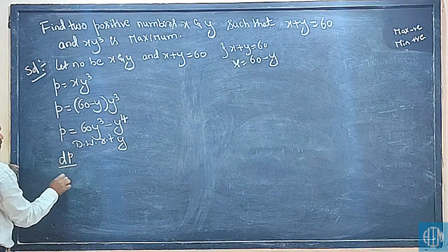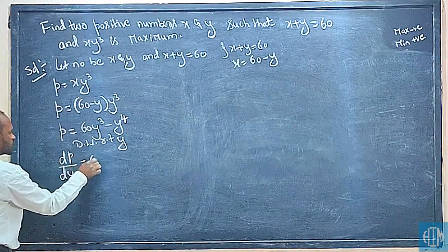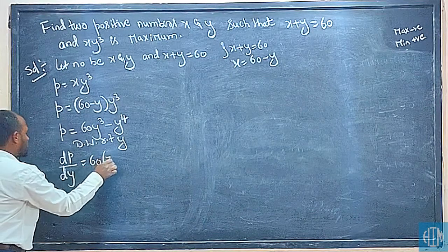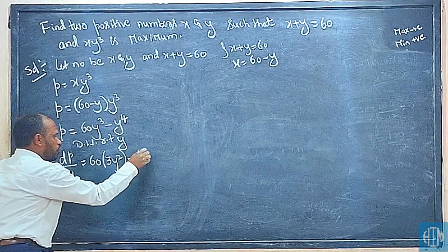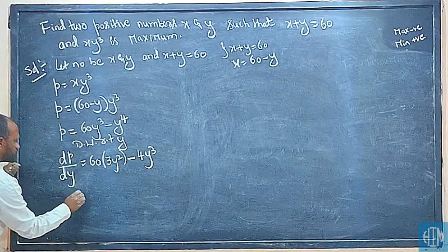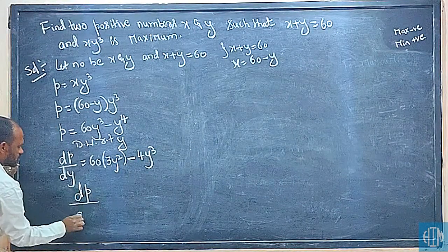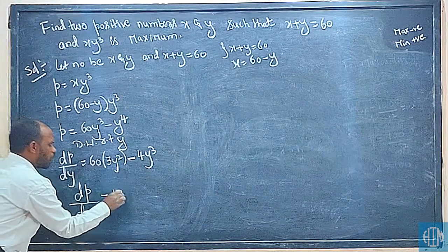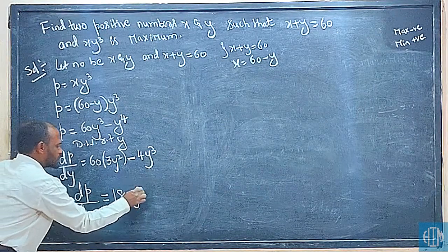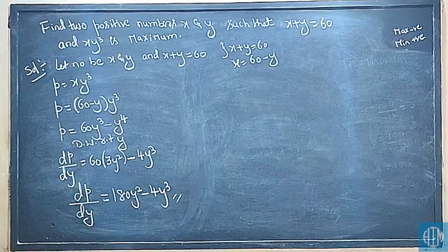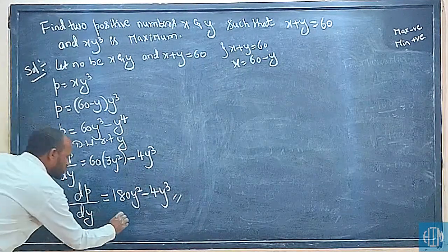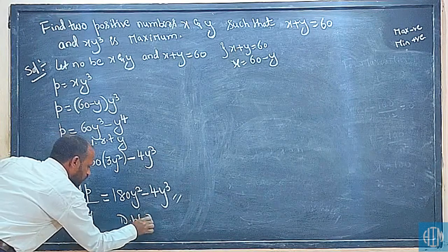Differentiate with respect to y. Constant outside, y³ becomes 3y². What is the derivative of y⁴? 4y³. So dP/dy equals 180y² minus 4y³.